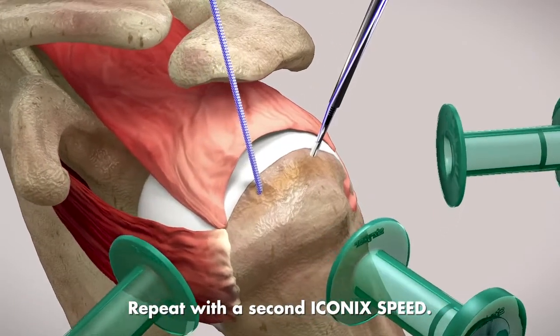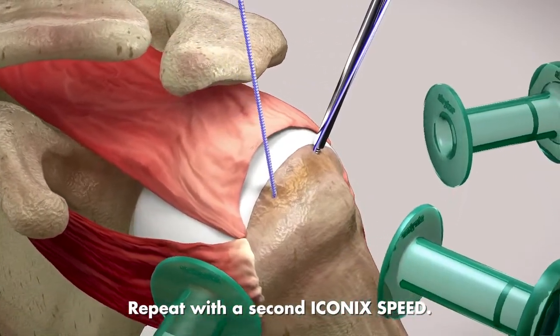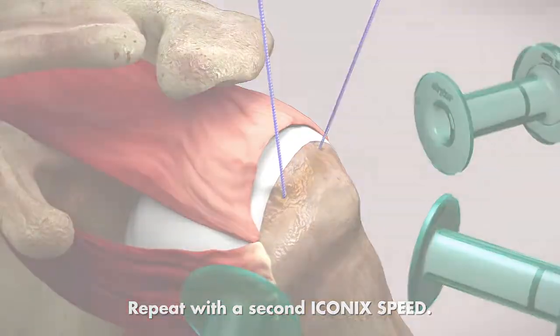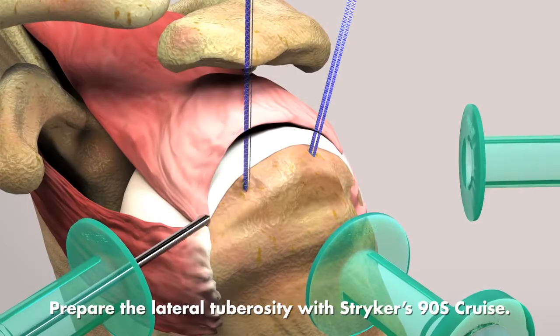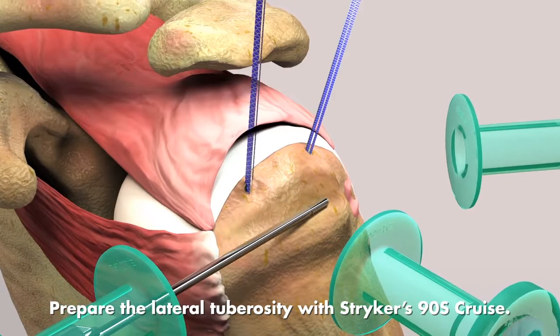Repeat with a second ICONICS SPEED. Prepare the lateral tuberosity with Stryker's 90S screws.